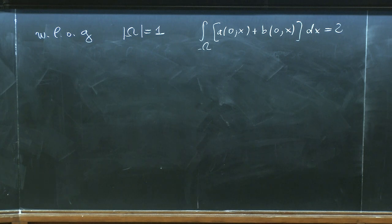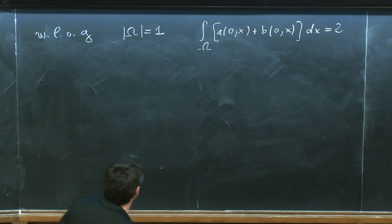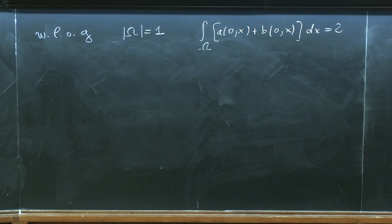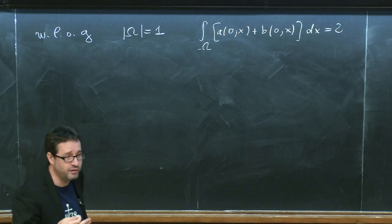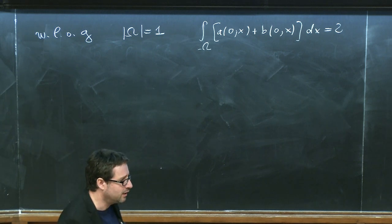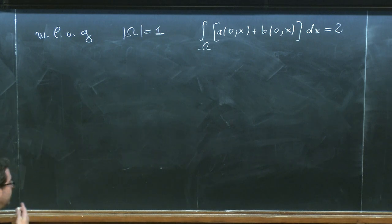The reason for choosing total mass equal to two is that at equilibrium I want a_∞ equal to one and b_∞ equal to one in the domain. Now let me describe the entropy structure. The natural physical entropy is a·log(a) + b·log(b), but it is easier to start from the simpler entropy H(a,b) = (1/2) times the integral of a² plus b².